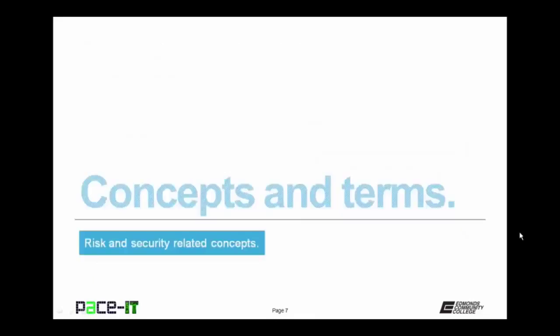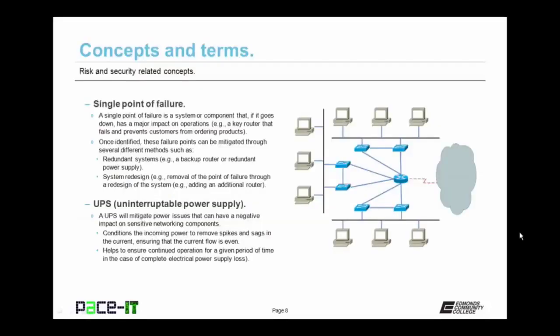Now let's talk about some concepts and terms that you should know. First up is single point of failure. A single point of failure is a system or component that, if it goes down, has a major impact on operations. An example is if a key router goes down and it prevents customers from ordering products — that's a single point of failure. Once identified, these failure points can be mitigated through several different methods, such as redundant systems, like adding a backup router, or a redundant power supply. Single points of failure can also be mitigated through system redesign, removing that point of failure through a redesign of the system.